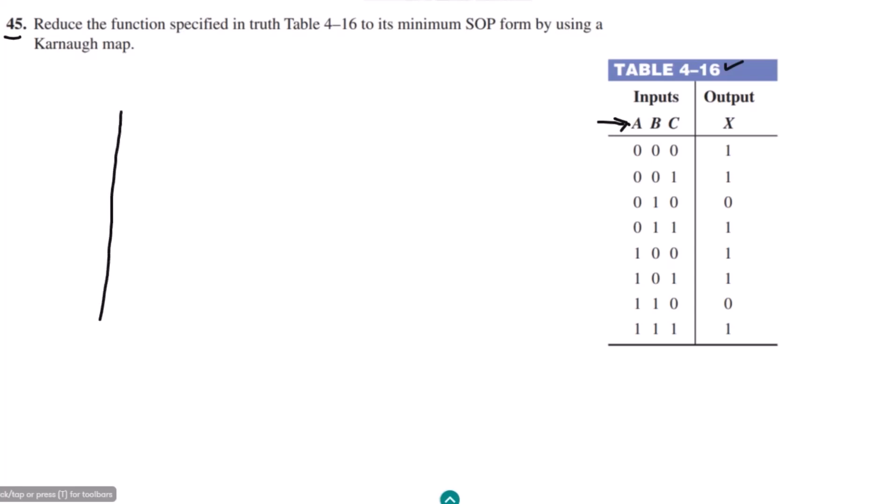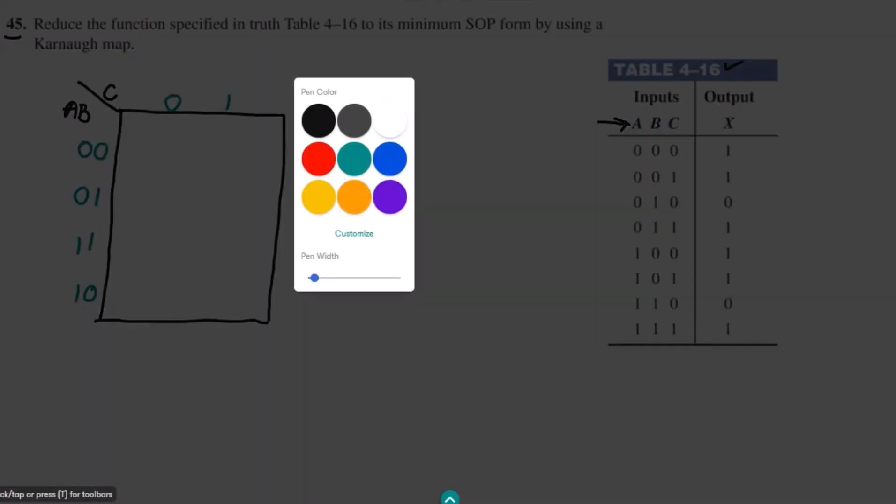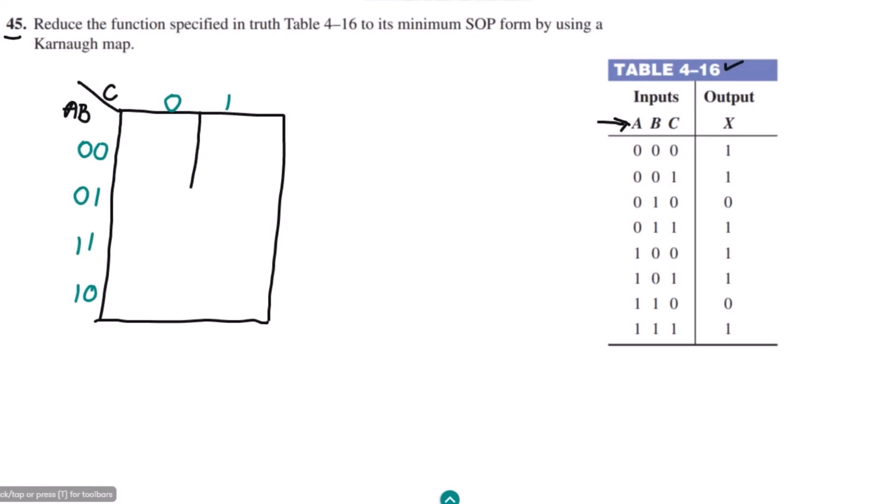Let me first draw the Karnaugh map here. Here we have this Karnaugh map and the terms here are A, B, and here we have C. What are the bit combinations? Here I have 00, 01, 11, and 10, and similarly here I have 0 and 1. Let me complete this Karnaugh map, so these are the cells.